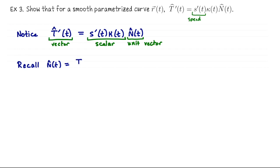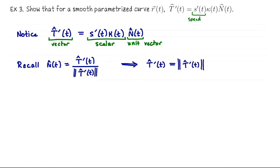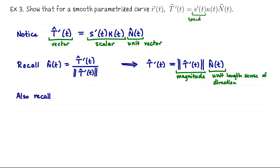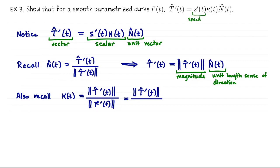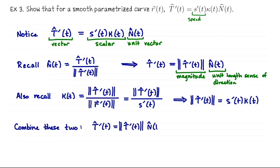Recall that N-hat equals T-hat prime divided by its own length, so T-hat prime equals its own length times N-hat. Also recall that the curvature equals the length of T-hat prime divided by the speed s prime, which means the length of T-hat prime is s prime times the curvature. Combining these two facts gives us the formula T-hat prime = s' · κ · N-hat. That finishes this exercise on T, N, B, curvature, and the osculating circle.